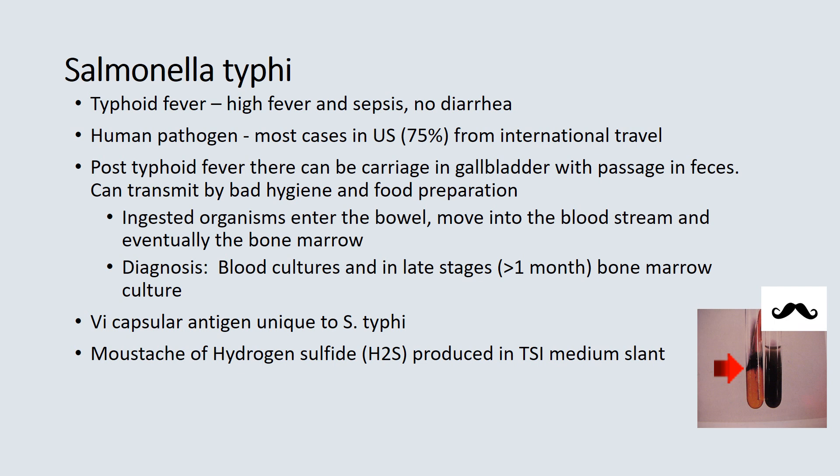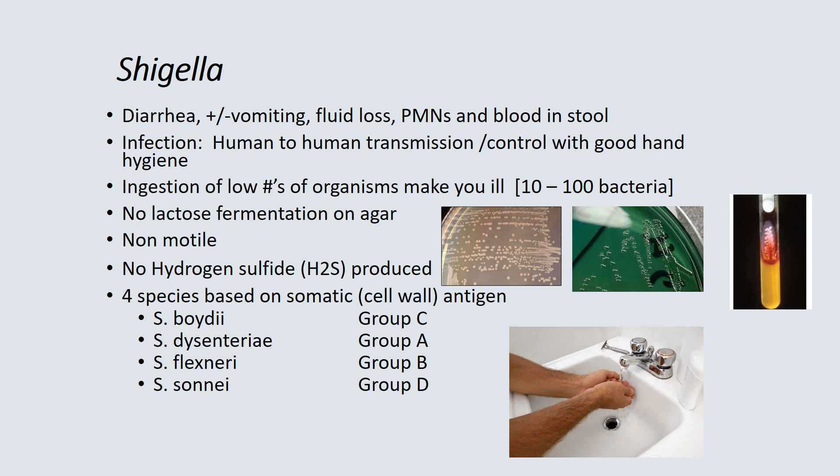Salmonella typhi is unusual in that bone marrow becomes one of the primary specimens — in early infection blood cultures are often positive, but in later stages after one month, bone marrow cultures are often needed. The Vi capsular antigen from the Kauffman-White scheme is used to identify Salmonella typhi. On a TSI slant, it shows a 'mustache of hydrogen sulfide' — a band only in the center part of the slant.